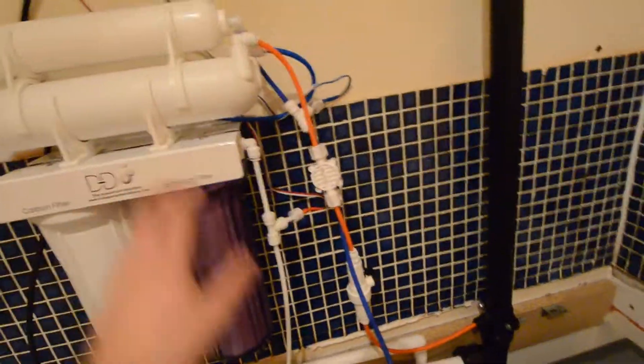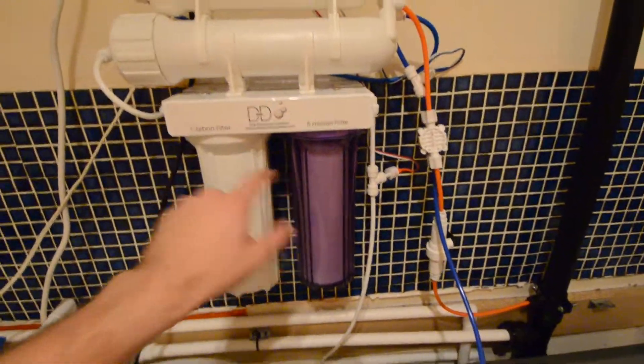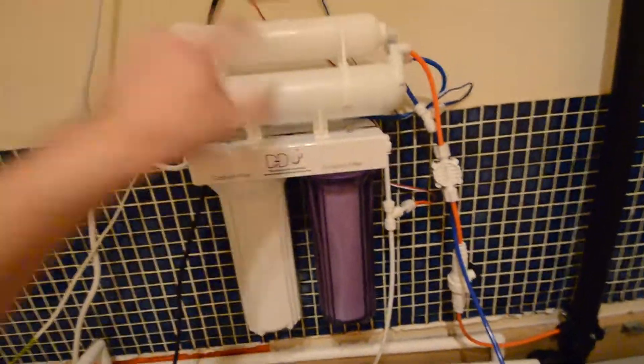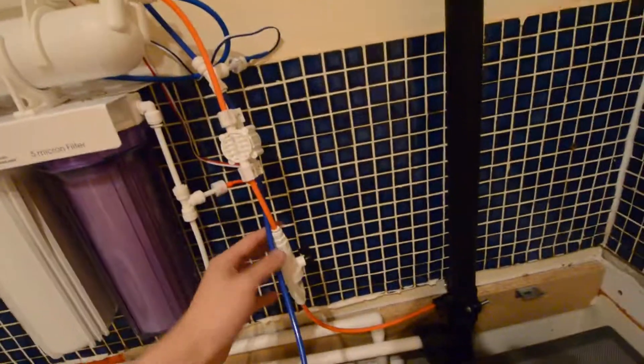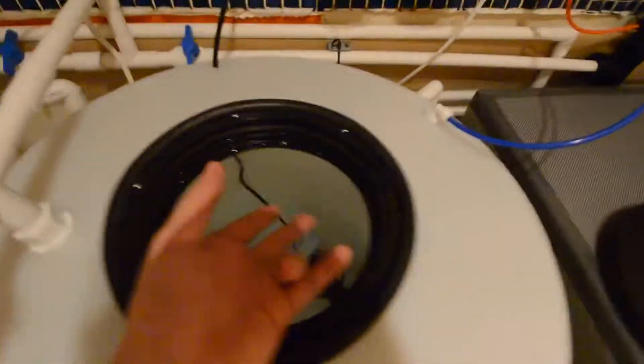The RO unit then runs through this micro filter, through the carbon filter, through the membrane, and then finally at the DI stage, coming out this pipe here, this blue pipe all the way back into the tank. Obviously when the float switch fills up it will kick in and shut it off.